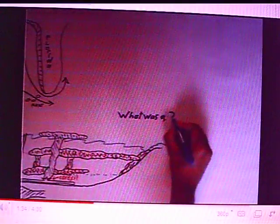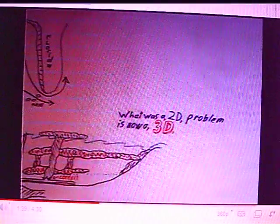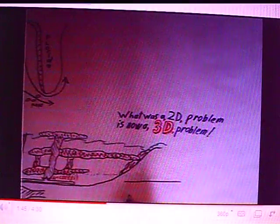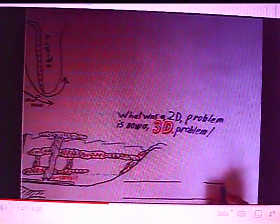What was a two-dimensional problem is now a three-dimensional problem. What does that mean? Oil at the surface is a lot easier to clean up than oil at various levels deep in the water. Over time, the Corexit will break down and the oil will come to the surface.